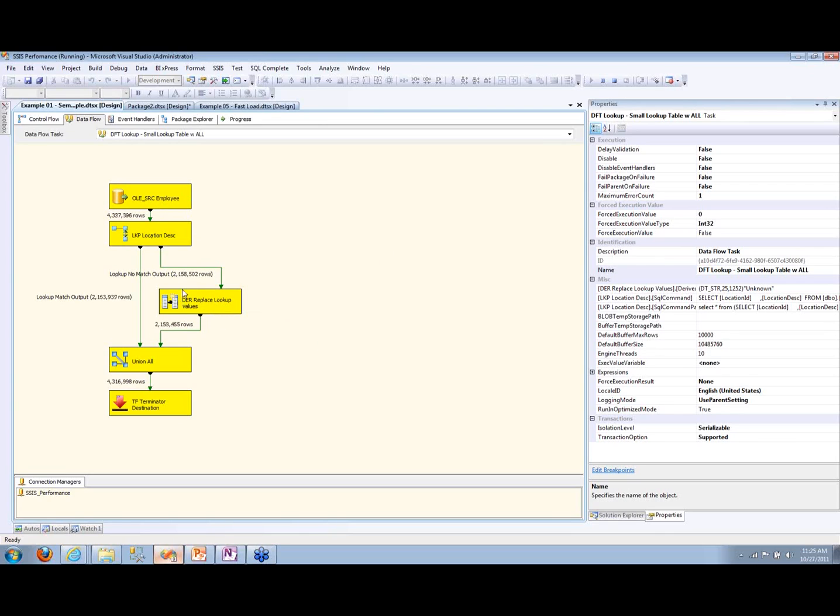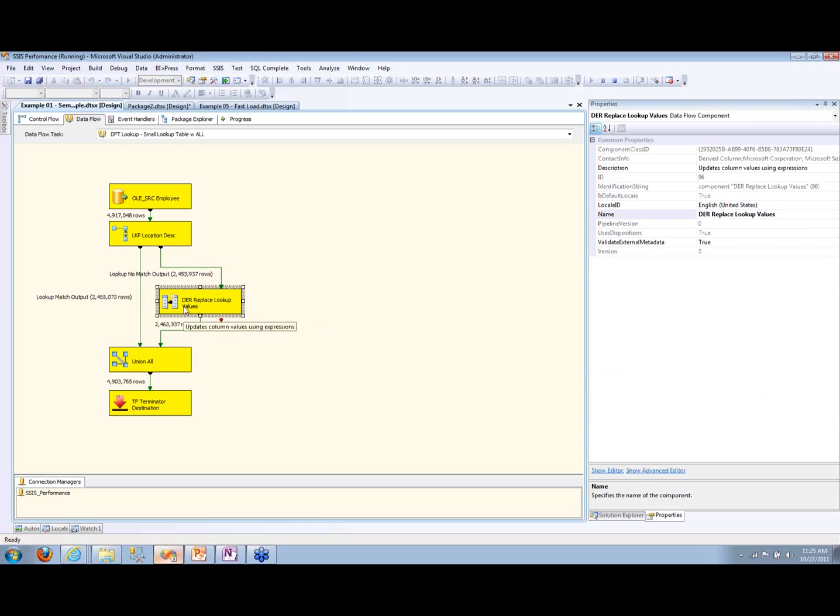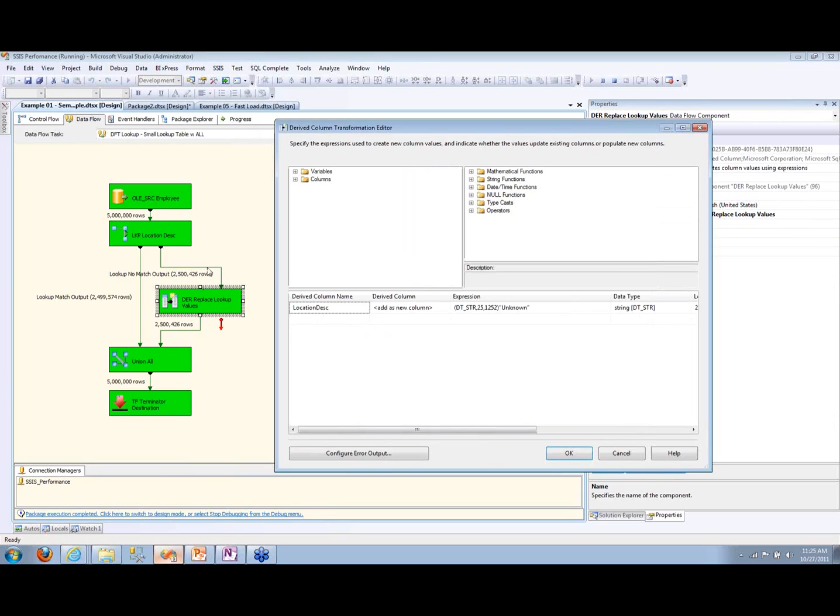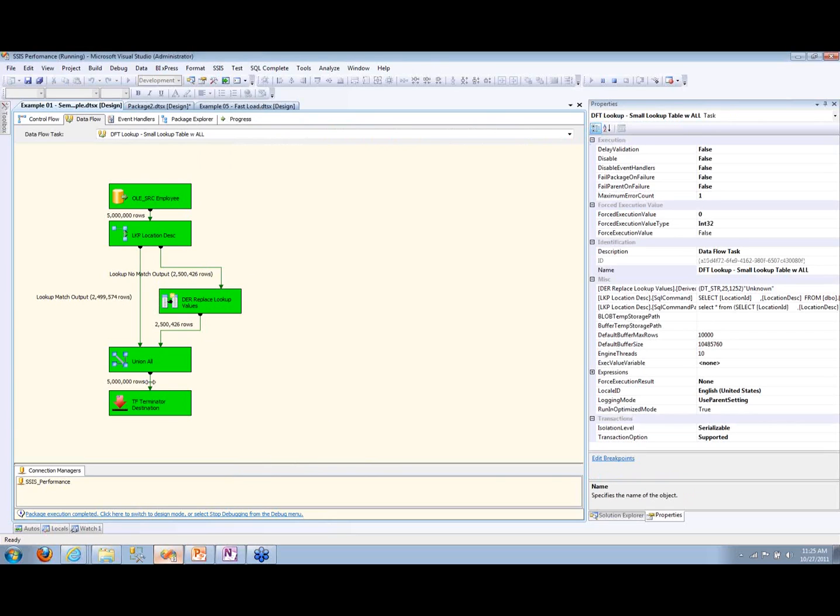And it flows through and it's doing lookups. What this component right here is doing is that if it can't find a particular location description, it says okay, if it's null that comes down that I can't find this, just put unknown.